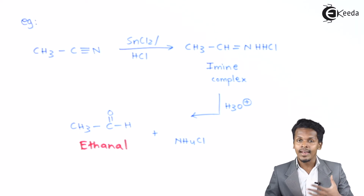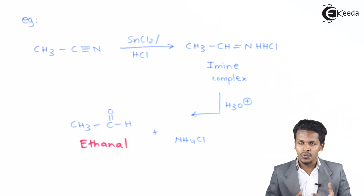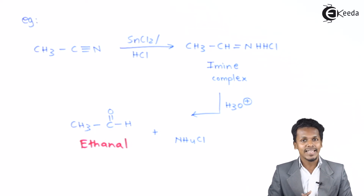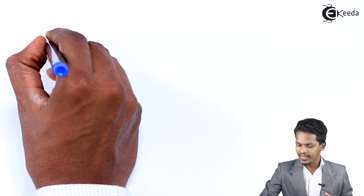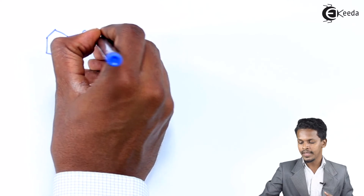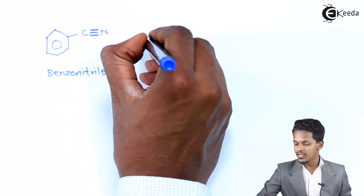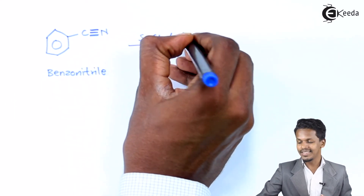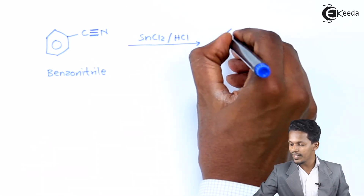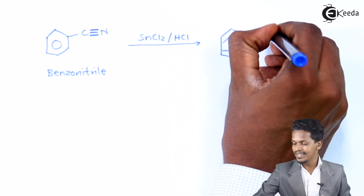This is how we can form an aliphatic aldehyde, but this reaction can also help us get an aromatic aldehyde. To prepare the aromatic aldehyde, we consider benzonitrile — a benzene ring with a cyanide group attached to it. When benzonitrile undergoes reaction in presence of SnCl₂ and dilute HCl, the product formed is an imine complex.